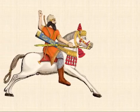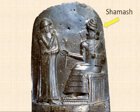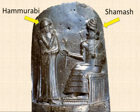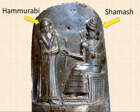Each law had a corresponding consequence for breaking it. These consequences seem harsh when compared to those used today. For example, one of the laws states that if anyone is committing a robbery and is caught, then he shall be put to death. At the top of the stele is a relief sculpture that depicts King Hammurabi receiving the laws from the Babylonian god Shamash. Here, Shamash is shown as larger than King Hammurabi. If the god was to stand up, he would be much taller than the king. This shows how important the god is. The fact that he is shown telling the laws to Hammurabi is to show the people that the laws are straight from the gods and so must be obeyed.